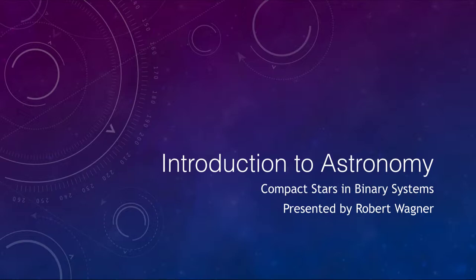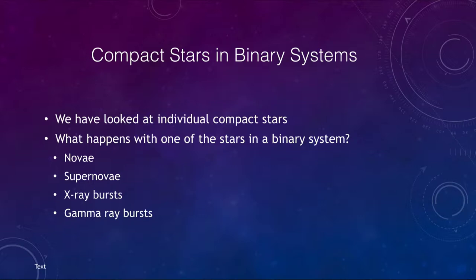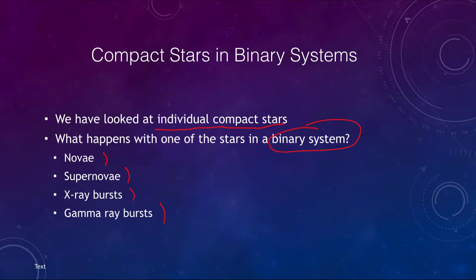We have looked at white dwarfs and neutron stars individually, but what happens when one of these stars is in a binary system? We know that half the stars in the universe are in binary systems, so that implies there are many cases when a compact star will be present in one. We can get a number of different things: novae, supernovae, and x-ray and gamma ray bursts. The supernovae we get here are different from the Type 2 — that was a massive star at the end of its life. In this case, we'll see a different type of supernova.